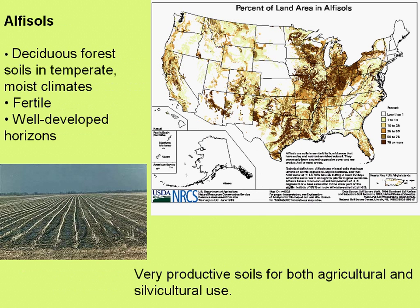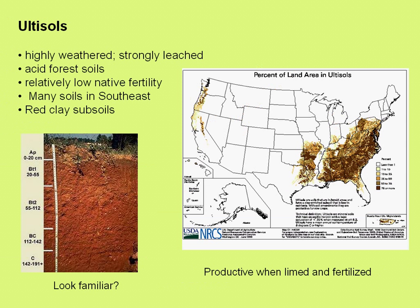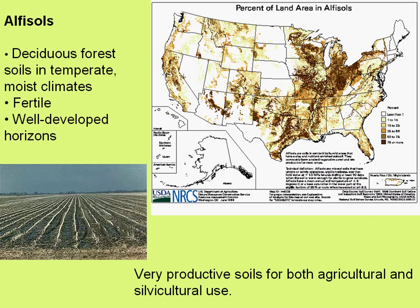Alfisols are more common in the central region of the United States and are very productive soils for both agricultural and silvicultural use. They are very fertile, and many deciduous forests are found on Alfisols. They feature well-developed soil horizons — a distinct soil profile with clearly defined layers — compared to Ultisols which may only have a small organic layer.